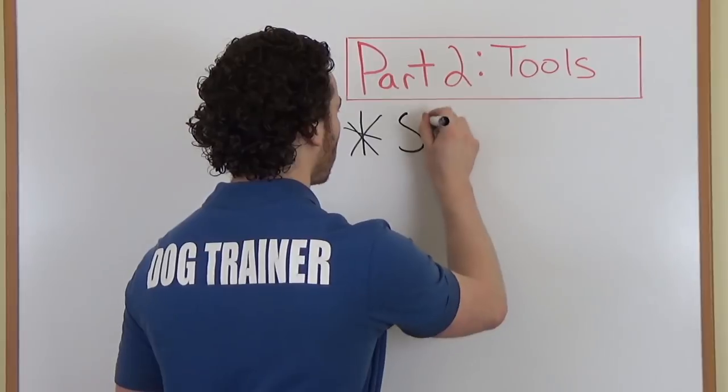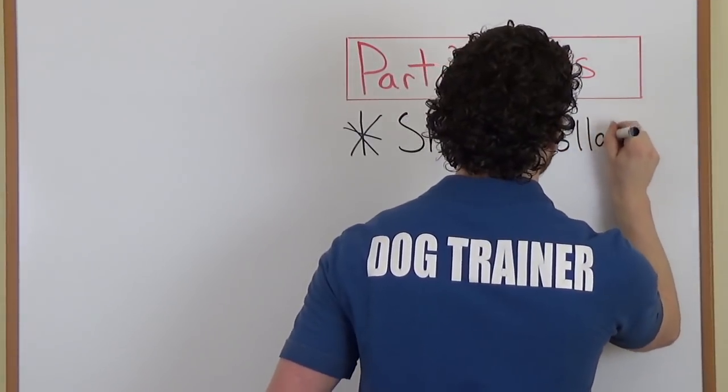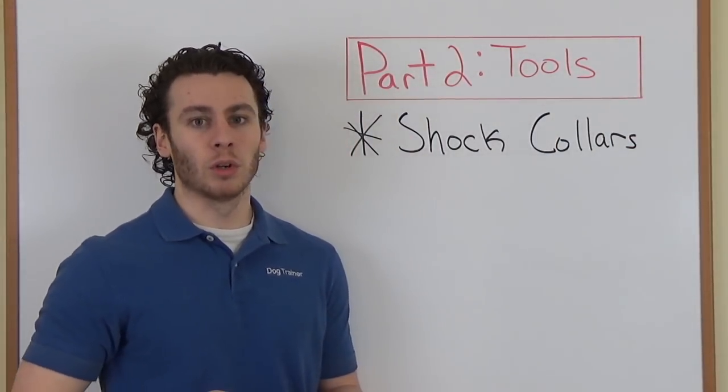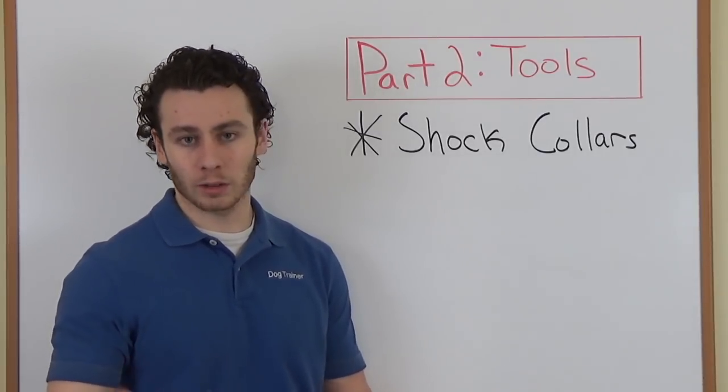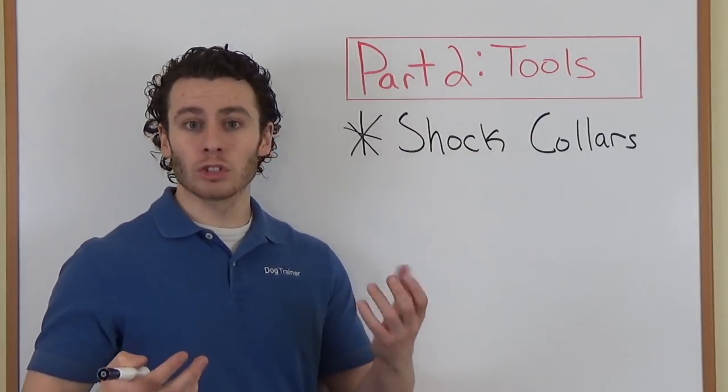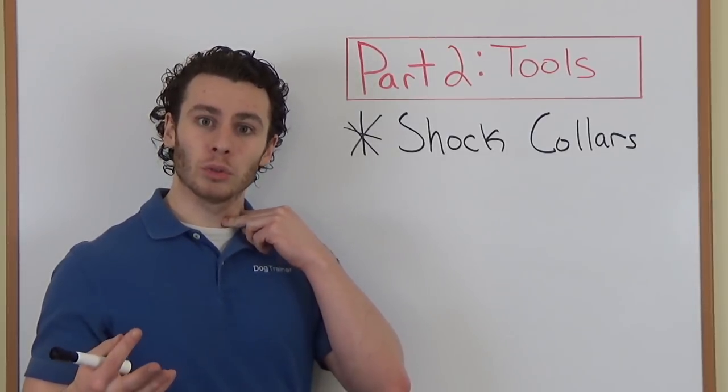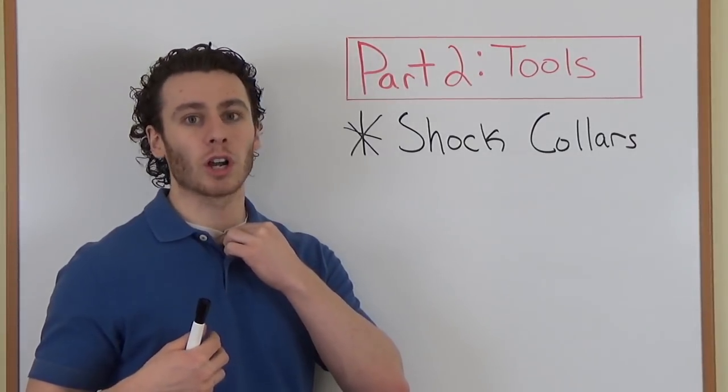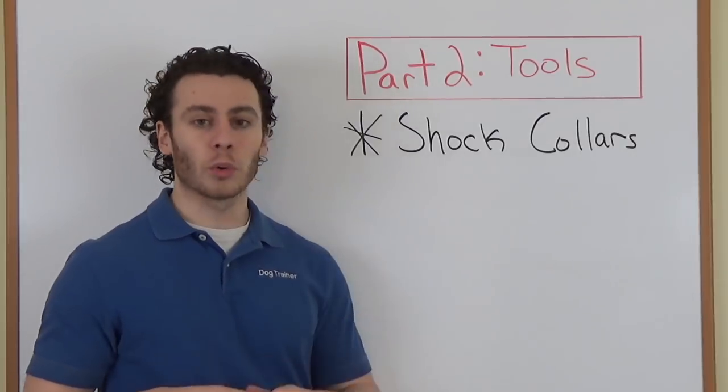So let's start off with shock collars, or maybe people will call them e-collars. It's the same thing. Usually people will just say e-collar instead of shock collar. Trainers will say that to try to sell a potential client on using it to make it sound less harmful than it is, because they're terrible. A shock collar essentially is a little box with two prongs that goes into the dog's neck and they can be automated to shock the dog when the dog barks. The dog will bark and the vocal cords vibrate, it sets off the shock. They can be remote trainers where you can shock the dog with the press of a button.